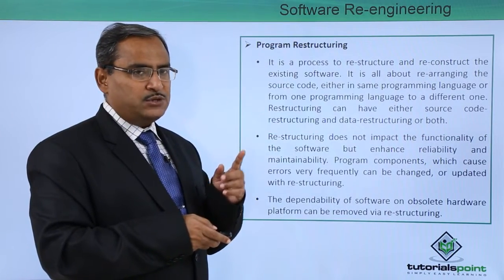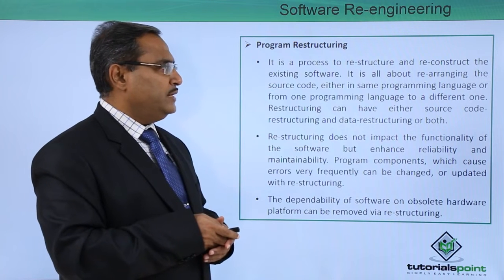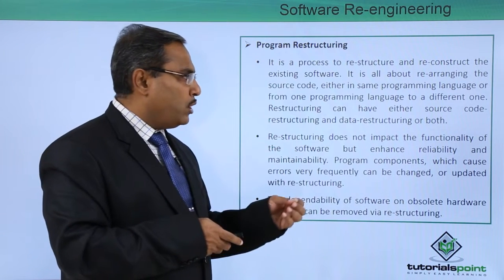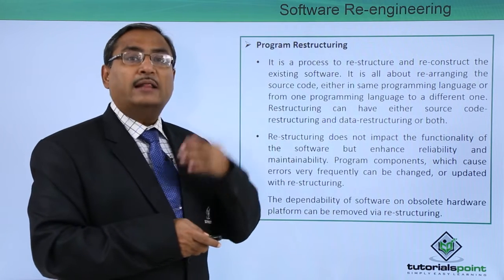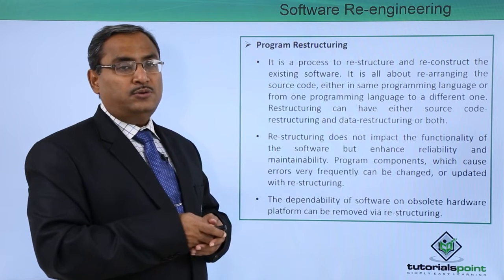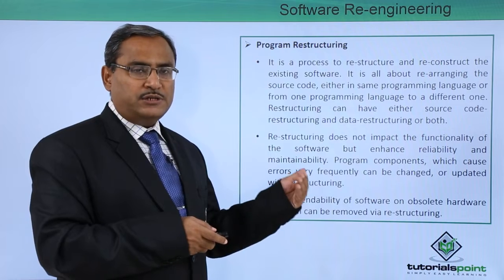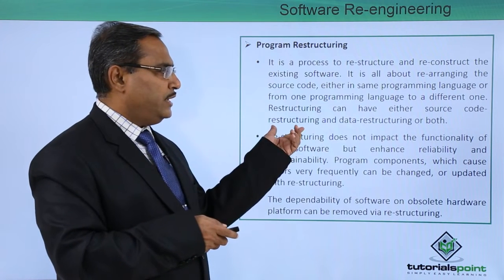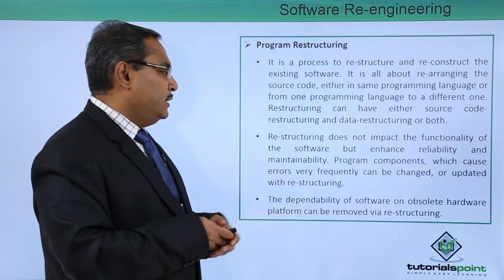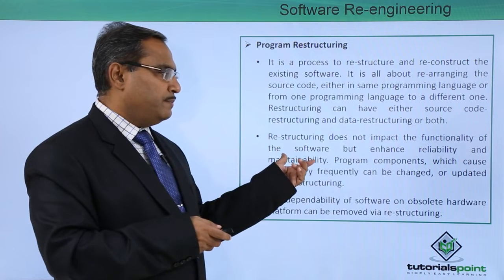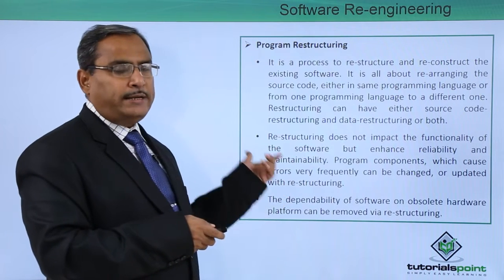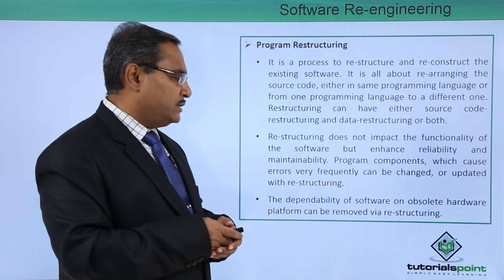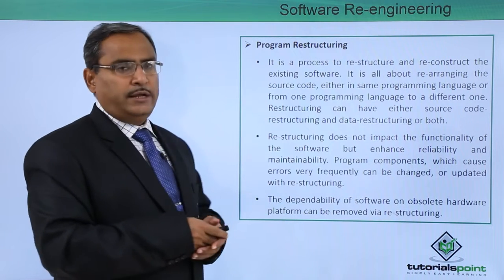The next phase is program restructuring — it is a process to restructure and reconstruct the existing software. It is all about rearranging the source code either in the same programming language or from one programming language to another, as in the example of Unix migrating from assembly language to C. Restructuring can involve source code restructuring, data restructuring, or both. Restructuring does not impact the functionality of the software but enhances its reliability and maintainability. Program components that cause errors frequently can be changed or updated through restructuring.